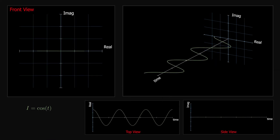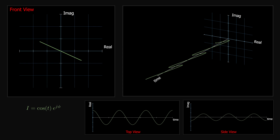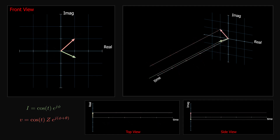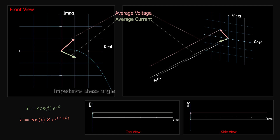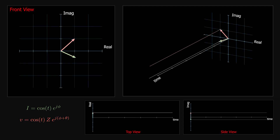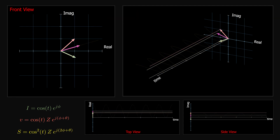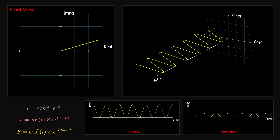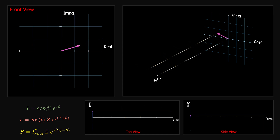If the current has some phase angle phi — rotated phi degrees from the positive real axis — then the voltage rotates an angle theta above the current, where theta is determined by the impedance. The impedance phase angle determines the angle between the voltage and current. The power is the product of voltage and current, rotated by an angle equal to the sum of the two angles. Since it is rotated in the complex plane, we call it complex power — a complex number with magnitude, phase, and real and imaginary parts. Average complex power is the product of average voltage and current.